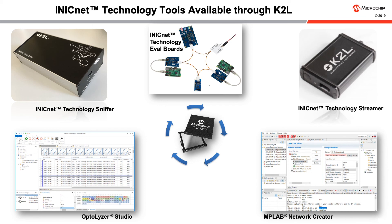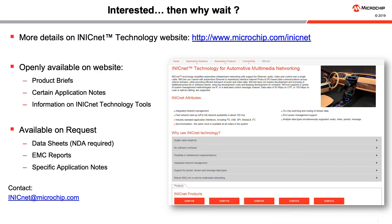MPLAB Network Creator is used to generate a valid system descriptor file for Unisense on the root node. It also supports the configuration of all iNICs in your iNIC NET through iNIC Kit. The iNIC Kit can be used to program and debug iNICs that support iNIC NET technology. The iNIC Kit box offers connectivity between a host application — for example, MPLAB running on a PC — and an iNIC device. Functionality similar to the sniffer and streamer is available for iNIC Technology 150 coax through the MoCA Compact hardware. The software and iNIC Kit for iNIC 150 coax are the same as for the iNIC 50 UTP, making migration to a different speed grade easy. Product briefs, application notes, and iNIC NET tool information is available on the website. More information is available on request through iNIC NET at microchip.com.